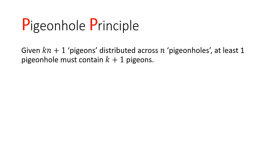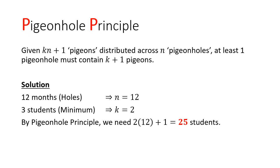Let's go back to question 1. For 3 students to have the same birthday month, we will first need to determine who is the pigeon and what is the hole. In this case, students are pigeons and months are the holes. Since we have 12 months, then n is equal to 12. And since we have 3 students, minimally, k must be equal to 2. So by the pigeonhole principle, we will need 2 times 12 plus 1, which is equal to 25 students.